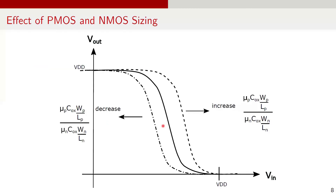Another important insight from the voltage transfer curve is the effect of relative strength or sizing of the PMOS and NMOS devices on the overall behavior of the CMOS inverter. We can analyze this by observing the effect of PMOS and NMOS strength on transfer characteristics. We can compare the relative strength of PMOS and NMOS by computing the ratio of mu_P * C_ox * (WP/LP) to mu_N * C_ox * (WN/LN). Here, mu_P and mu_N are the effective mobilities of the PMOS and NMOS. C_ox is gate oxide capacitance per unit area. WP and WN are the gate widths, and LP and LN are the gate lengths of the PMOS and NMOS respectively.